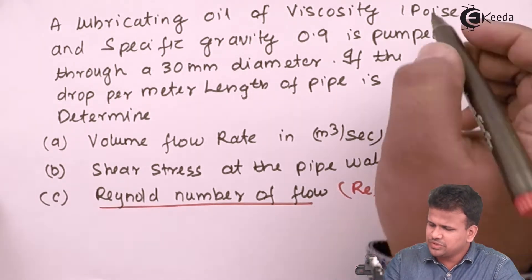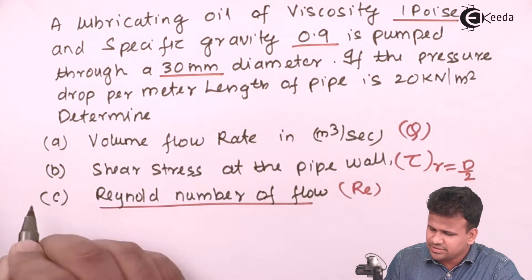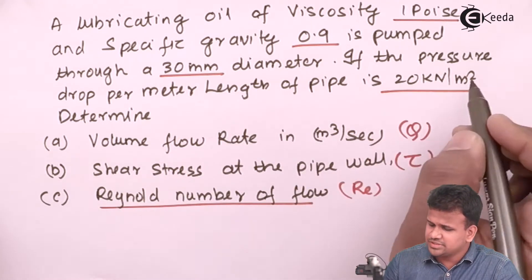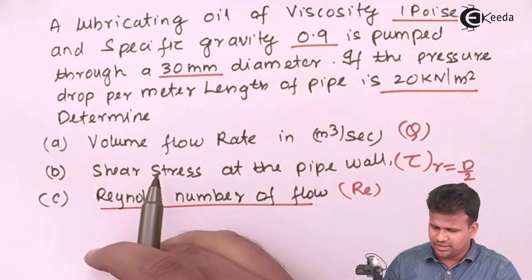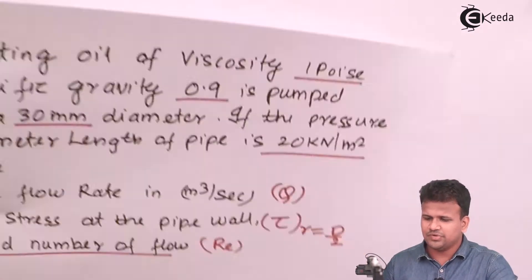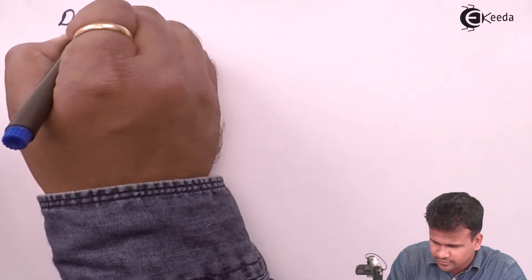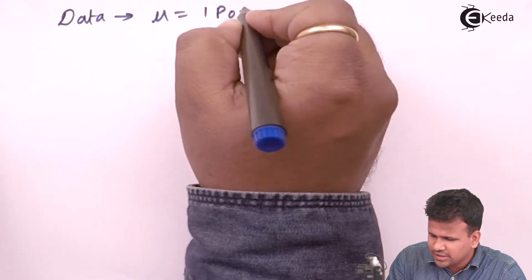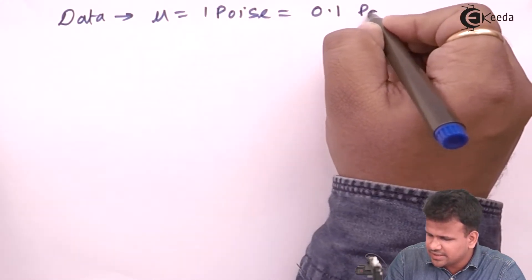From the problem, the first known quantity is viscosity: μ = 1 poise = 0.1 pascal-seconds.